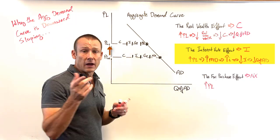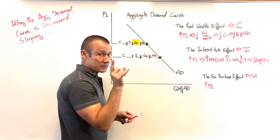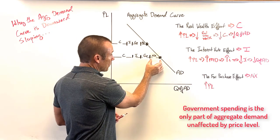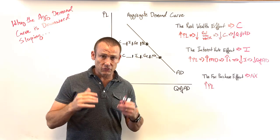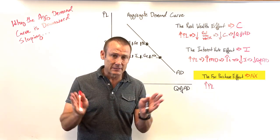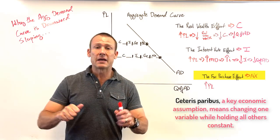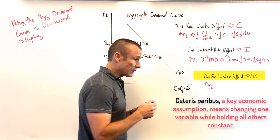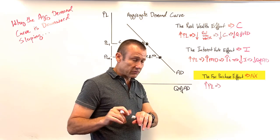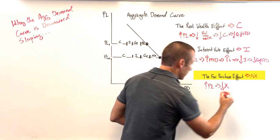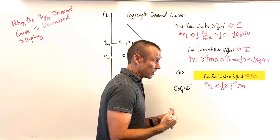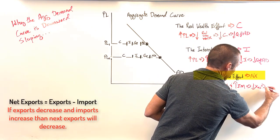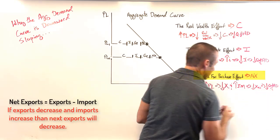When the price level goes up, government purchases don't change — they are determined by legislation and are not sensitive to the price level. Net exports, however, decrease. This is straightforward: our domestic price level goes up, ceteris paribus — exchange rates held constant, other countries' price levels held constant. Our prices rise while theirs don't and the exchange rate doesn't change, so people buy less of our stuff (exports fall) and we buy more of their stuff (imports rise), meaning net exports (XN or NX) go down, causing a decrease in the quantity of AD.